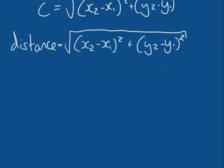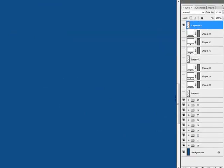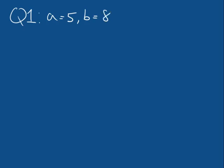This distance formula is incredibly useful when we're working in computer graphics. Now that we've covered all of the theory for this lesson, I want to set some questions for you to work through. Question one: find the length of the hypotenuse of a right-angled triangle, given that the other two edges have lengths of 5 units and 8 units. So A equals 5 and B equals 8. Go ahead and pause the video and give this a go. If you get the answer or get stuck, unpause and I will work through the solution.